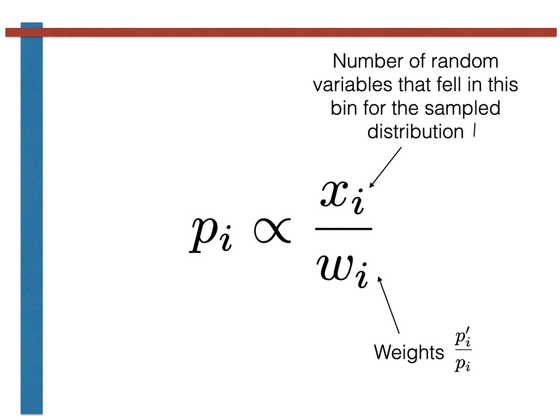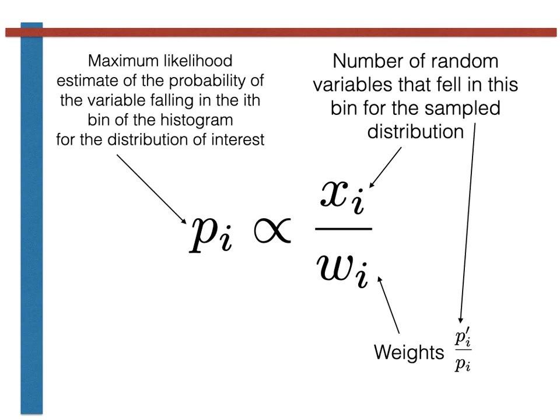Finally, the pi is the maximum likelihood estimator for the probability that the random variable will fall in the ith bin of the histogram for the distribution that we are interested in, p. We can thus use this expression to calculate probability distributions even if we do not know how to sample them.